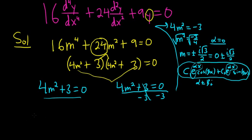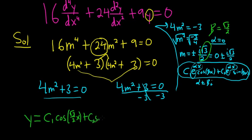So the final answer in this case is y equals c1 cosine - our beta in this problem is the square root of 3 over 2, right? It's just this piece here without the i. So it'll be square root of 3 over 2 x, plus c2 sine square root of 3 over 2 x.